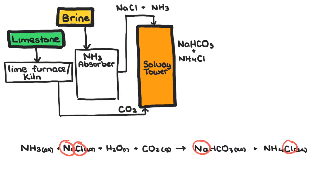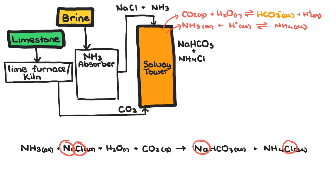The sodium ions and chloride ions are spectator ions in this process. When carbon dioxide is bubbled through the ammoniated brine in the Solvay tower, it dissolves to form a weak acid. The ammonia in the brine reacts with the hydrogen ions to form ammonium ions, and then the hydrogen carbonate ions react with the sodium ions to form a suspension of sodium hydrogen carbonate.